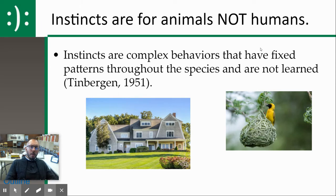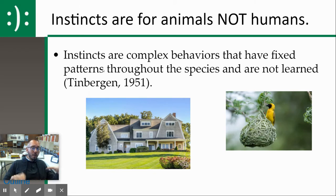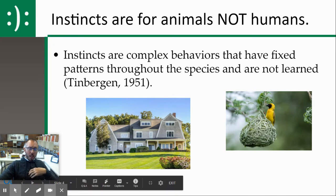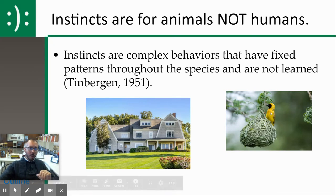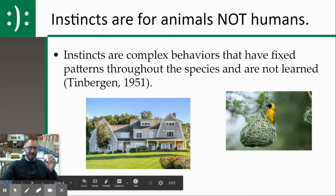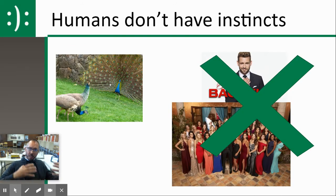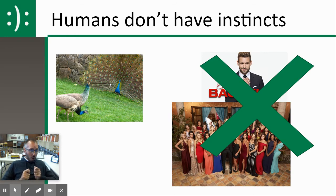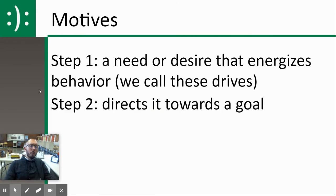As we're looking at motives, remember that we don't have instincts as humans. Instincts are for animals, not for humans. Instincts are very complex behaviors that have a fixed pattern throughout an entire species — like this type of bird building the same type of house across the entire species. Not all humans build this exact type of house. A peacock has a very specific way of mating procedures; thankfully we don't all follow that. We do not have fixed patterns of complex behavior across our entire species, so we won't be talking about instincts.